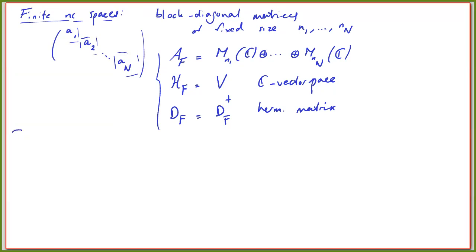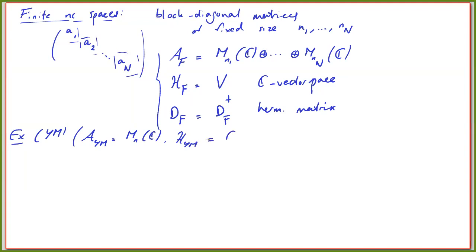Let's look at an example: the Yang-Mills example. You take just one single point, your algebra is M_N(C), the Hilbert space H_{YM} is C^N, and D is some Hermitian matrix of dimension N acting on C^N. All conditions of bounded commutators and compact resolvent are trivially satisfied because we're in the finite-dimensional case.